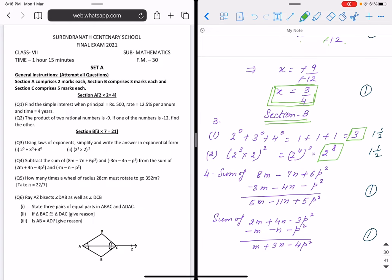Section B, which is of 3 marks each. First question is 2 to the power 0 plus 3 to the power 0 plus 4 to the power 0. Anything to the power 0, we know, is 1. So 1 plus 1 plus 1 that is 3.